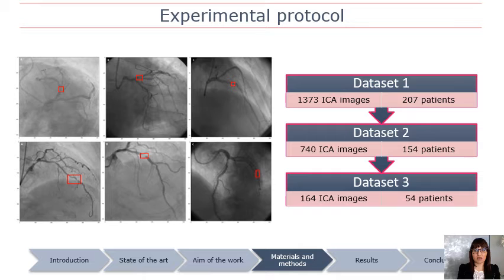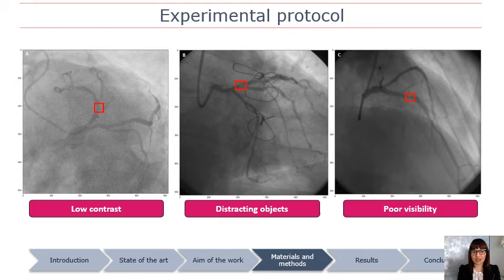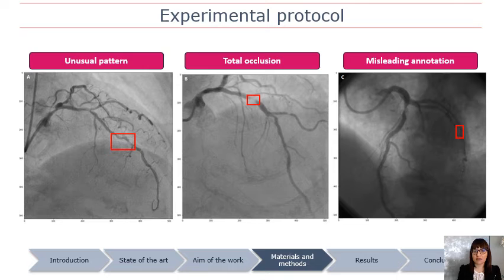To evaluate the behavior of YOLO V2 in the training process, different sessions were conducted with different datasets, maintaining the same split ratio of 80-10-10% for training, validation, and test sets respectively. The first attempt used all ICA images; the other two used a reduced dataset obtained by removing frames based on exclusion criteria. Some images were discarded due to low contrast between the coronary artery and the background, the presence of distracting objects, poor visibility of stenosis, unusual stenosis patterns, total occlusions, or misleading annotations.